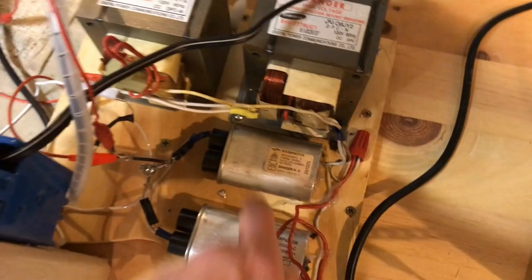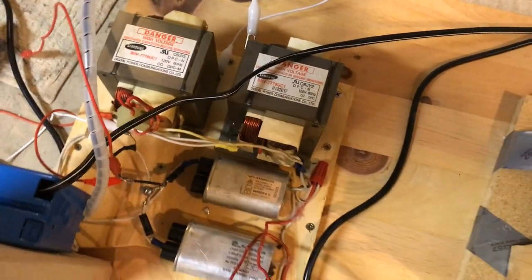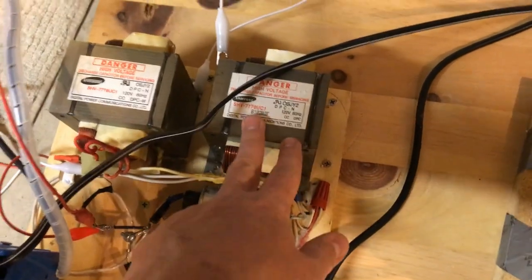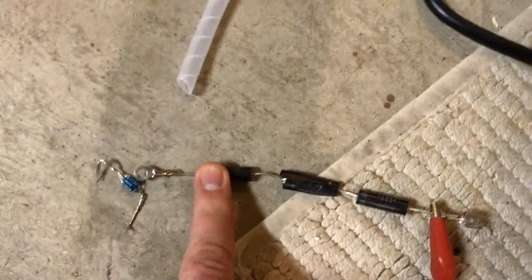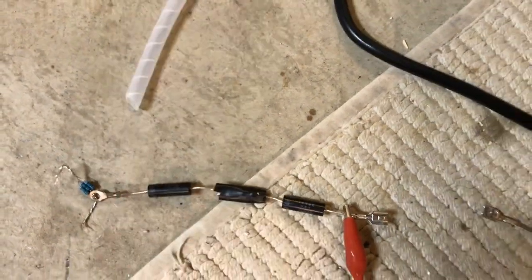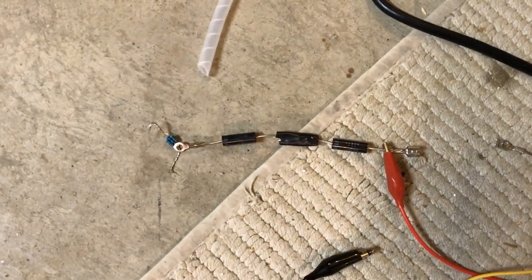Here we have two microwave oven capacitors and the two transformers of course. Right now I've just hooked up the transformers directly to the circuit we'll be working with along with two microwave oven diodes, rated for approximately 2,000 volts each.